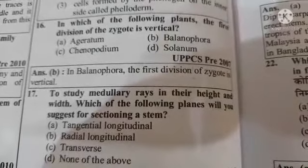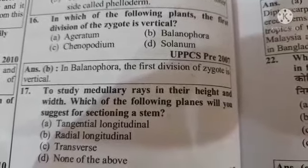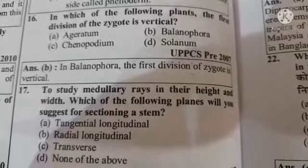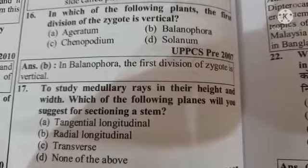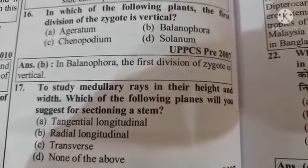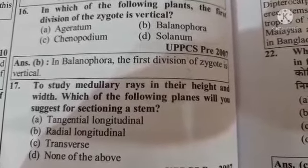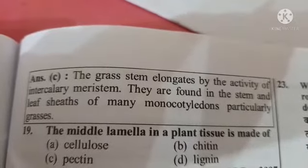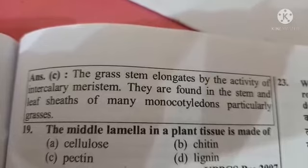Next question: to study medullary rays in their height and width, which of the following planes would you suggest for sectioning a stem? Option A tangential longitudinal, option B radial longitudinal, option C transverse, option D none of the above. The answer is option B, radial longitudinal.